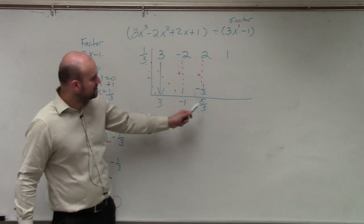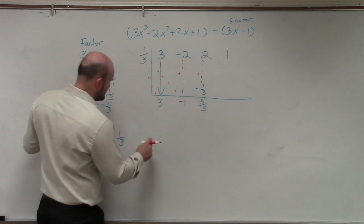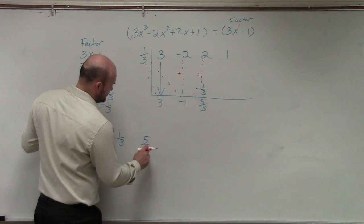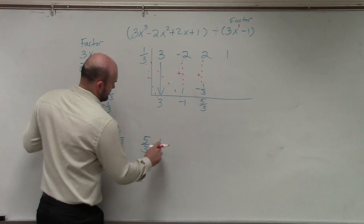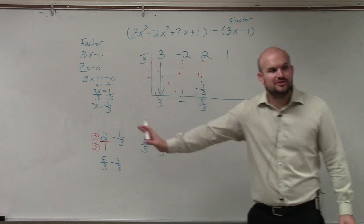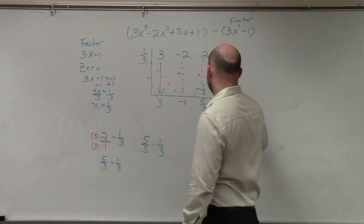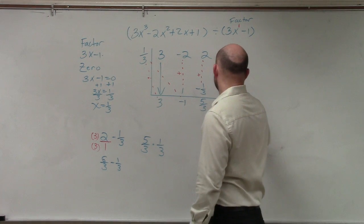Then we multiply diagonally. 5 thirds times 1 third. And if you say cross multiplication, I am going to fail you. Just kidding. So when you multiply fractions, you multiply straight across. 5 times 1 is 5, 3 times 3 is 9.